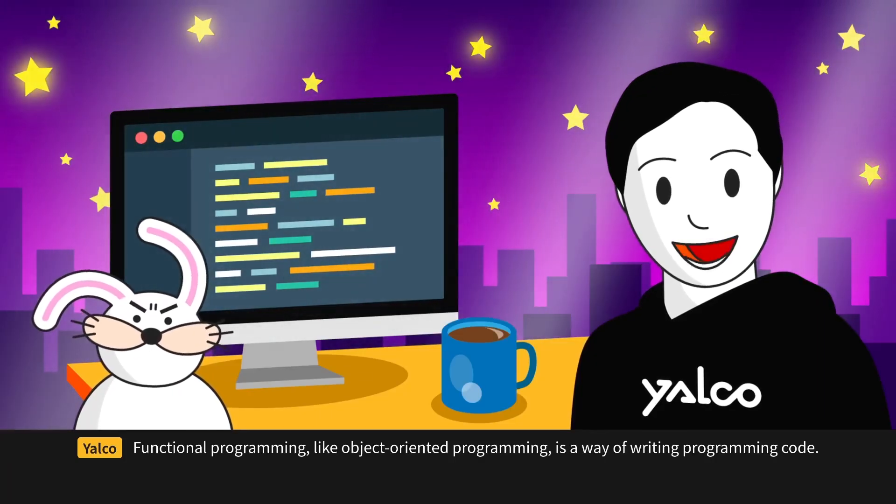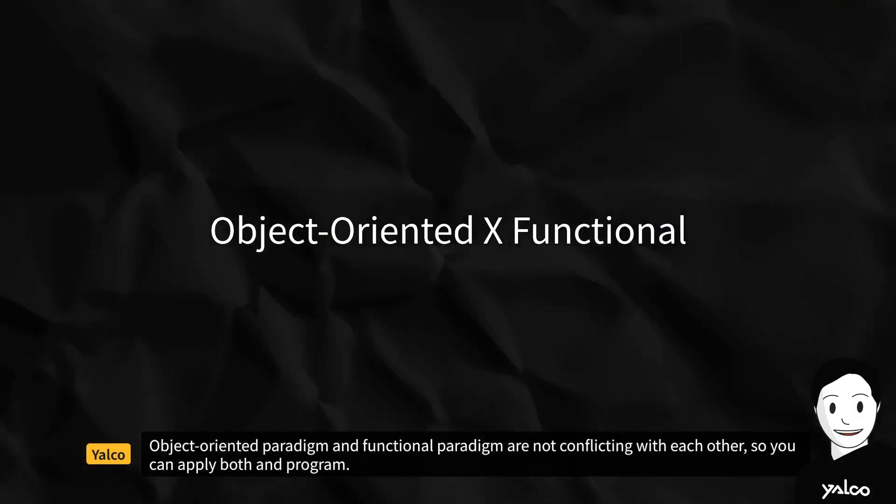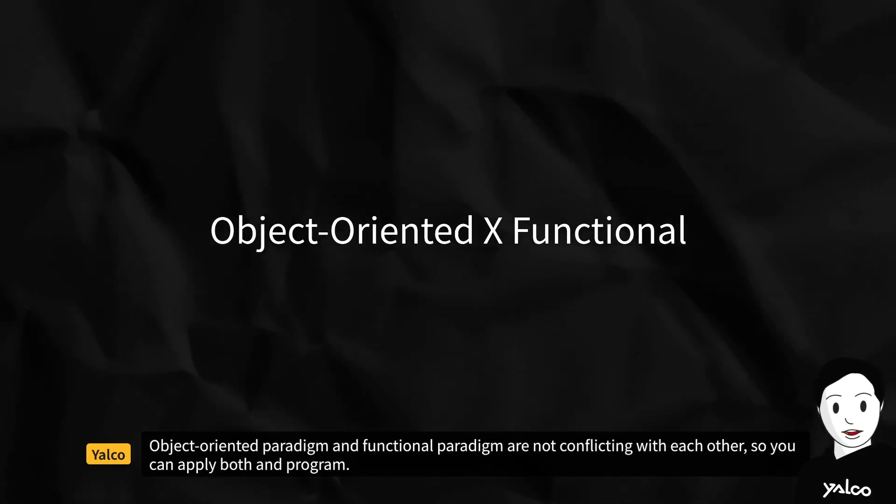Functional programming, like object-oriented programming, is a way of writing programming code. The object-oriented paradigm and functional paradigm are not conflicting with each other, so you can apply both in a program.